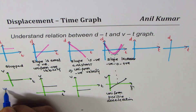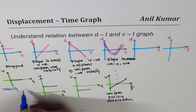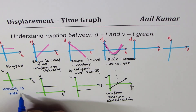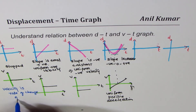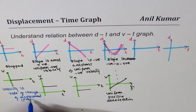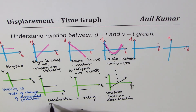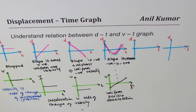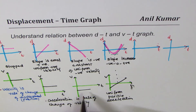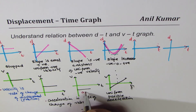To summarize the key definitions: velocity is the rate of change of displacement or position, and acceleration is the rate of change of velocity. In the earlier cases where velocity was zero or constant, acceleration was zero.